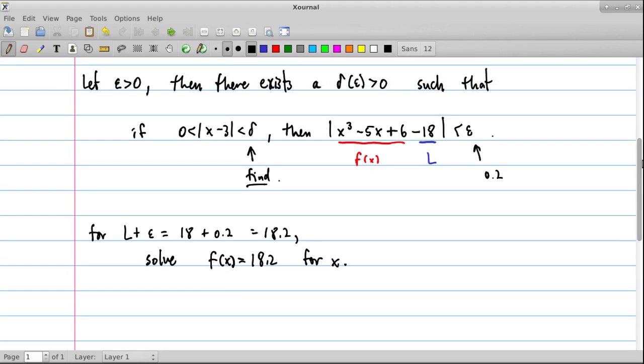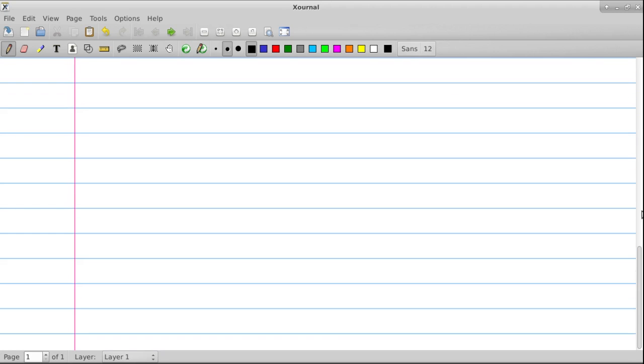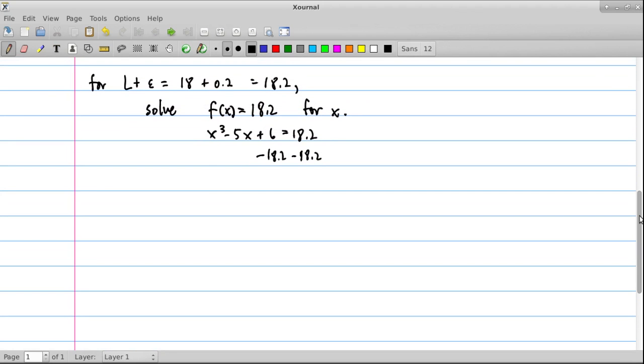And remember, we have a formula for f. So this is x cubed minus 5x plus 6 equals 18.2. We want to find the x value that gives us this answer. So to do that, we subtract from both sides the 18.2.